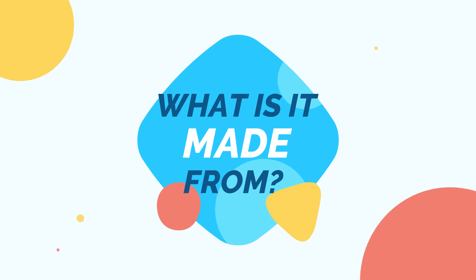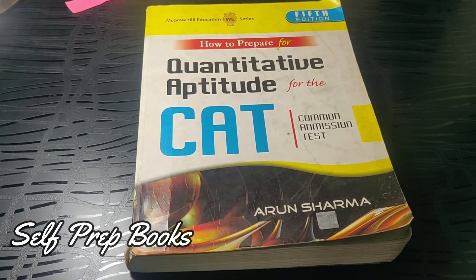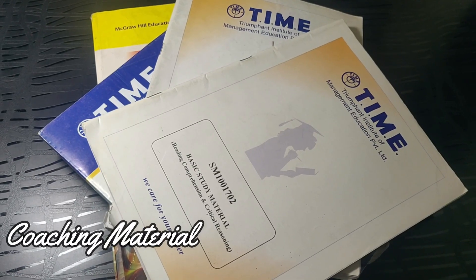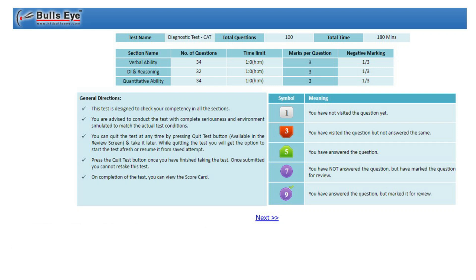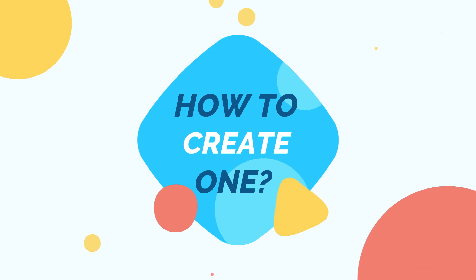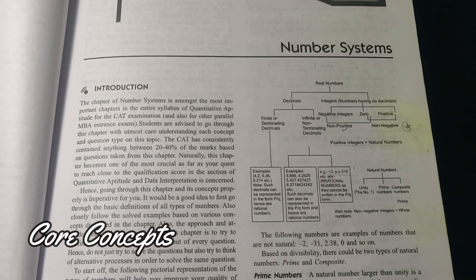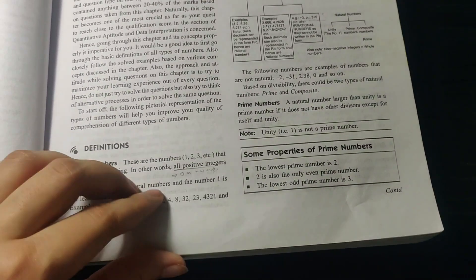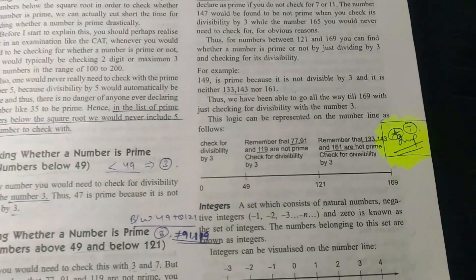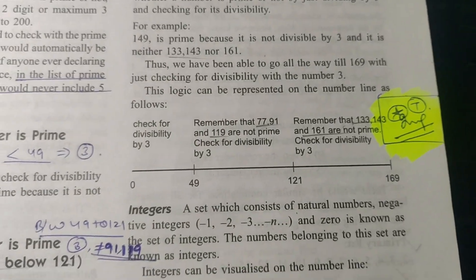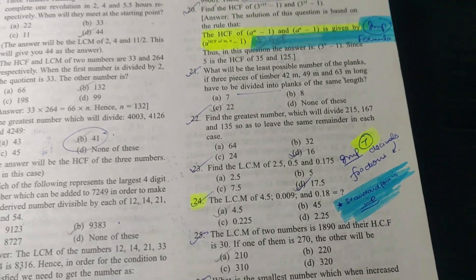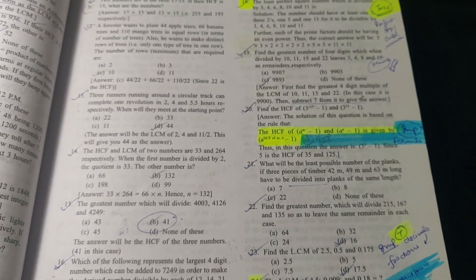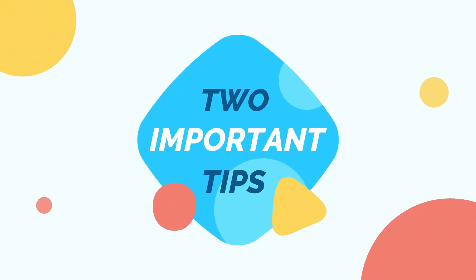Now, what do you need to make this formula book? You can use any self-prep books, any coaching material, any mocks or sectional tests — wherever you find a question, a formula, or a trick, you note it down. To create a formula book, first use the core concepts, where you'll find formulas and concepts mostly. Regarding tricks, they are found mostly in the question material you have — particularly in the solutions and analysis.